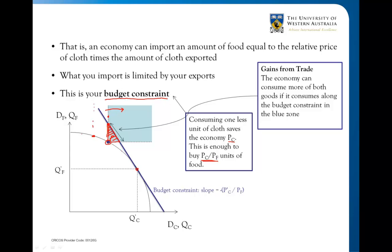The point is simply that a country can always consume what it produces. At that point on the budget constraint the two are the same — consumption possibilities equal production possibilities. Any country can always consume everything it produces, so consumption possibilities are at least as large as production possibilities.